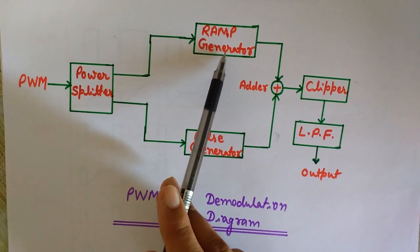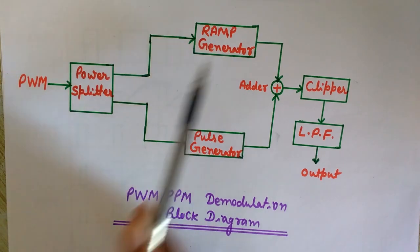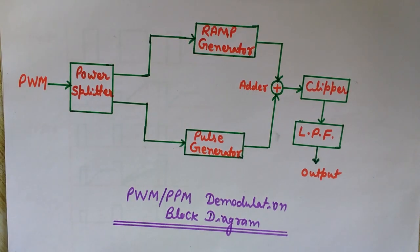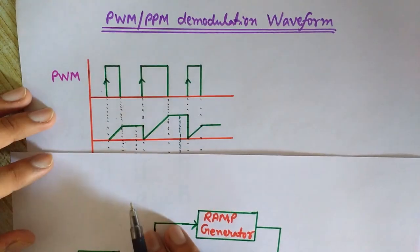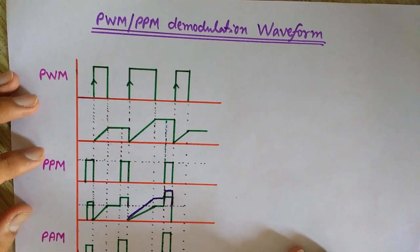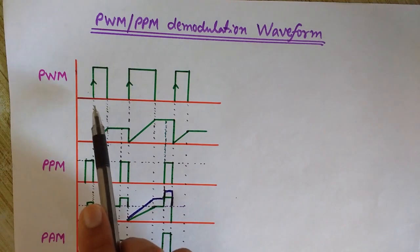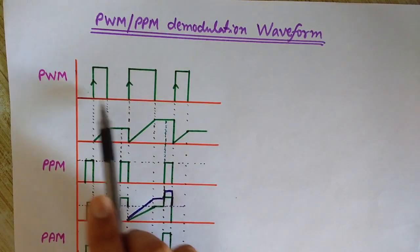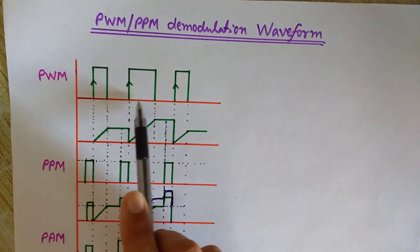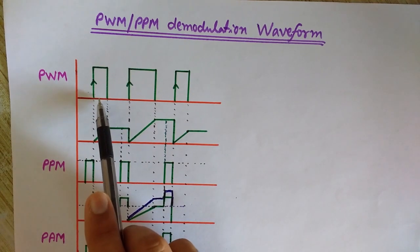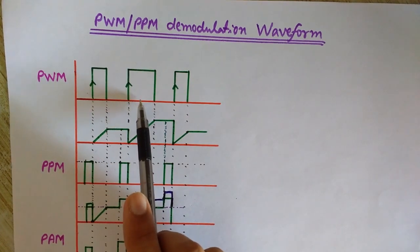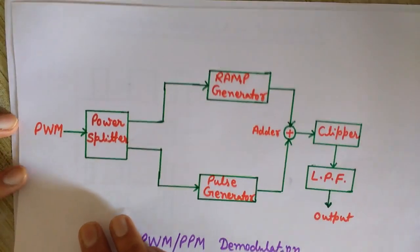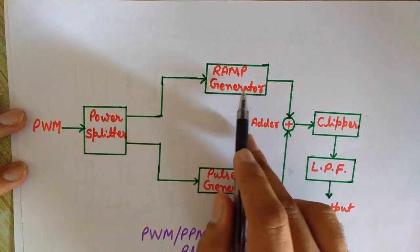The ramp generator acts as an integrator — it integrates the signal. The pulse generator's job is to create a pulse. In the PWM signal, the width of the pulsed carrier wave is varied according to the message signal's amplitude. You can see these variations: where the width is small the message amplitude was smaller, and where it is large the message amplitude was greater.